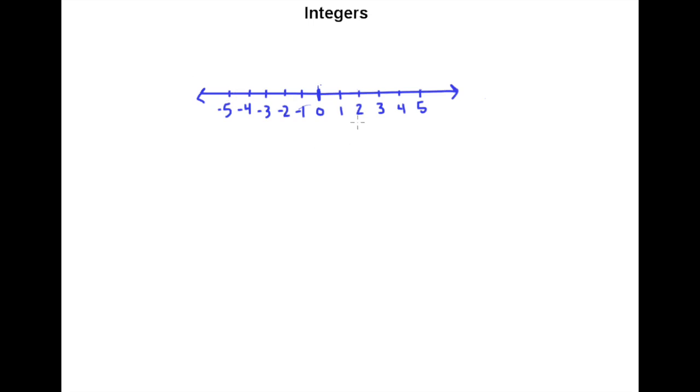Now with the whole numbers, one of the things we learned was that you determine the relative size of two numbers by where they fall on the number line. So for example, one is less than four because one is further to the left on the number line than four. And five is greater than three because five is further to the right on the number line than three is.